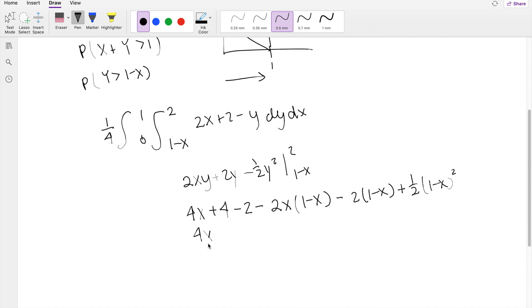Multiplying this out, you get 4X plus 2 minus 2X plus 2X squared, minus 2 plus 2X plus 1 half times 1 minus X squared.